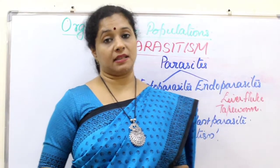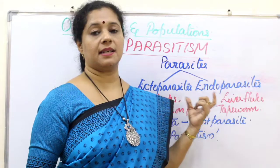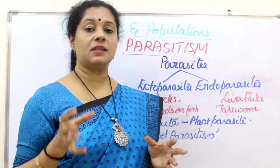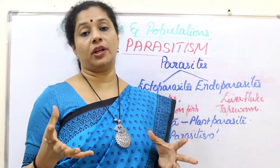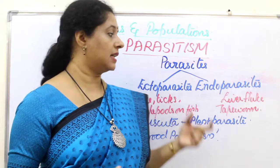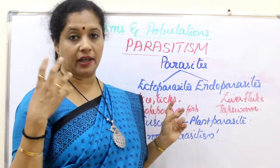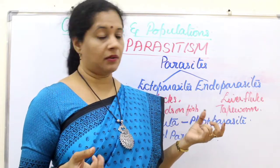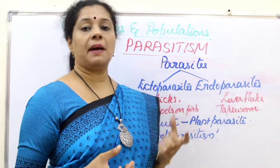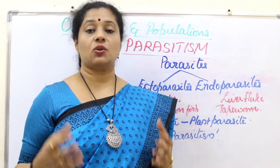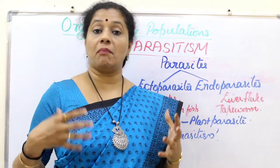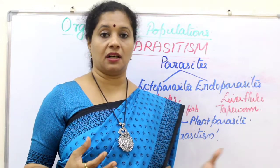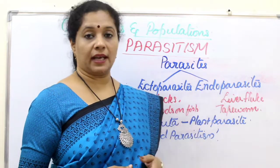Parasites can be classified into two types: ectoparasites and endoparasites. Ecto means outside — parasites living on the outside of the host body. Examples include lice on the human head, ticks on dogs, and copepods on fish. Endoparasites live within the body of the host. They usually have complex life cycles and the adaptations mentioned earlier. Examples include liver fluke and tapeworm.